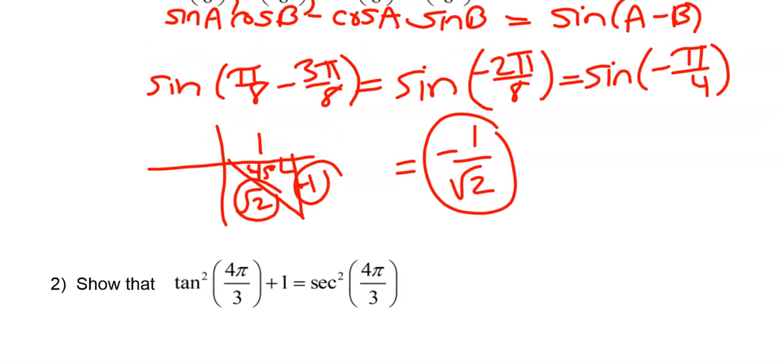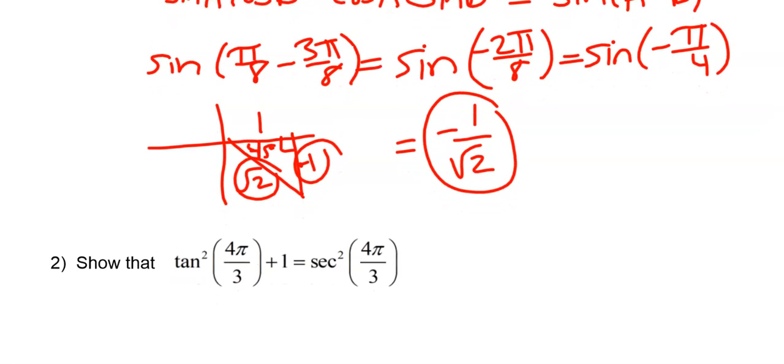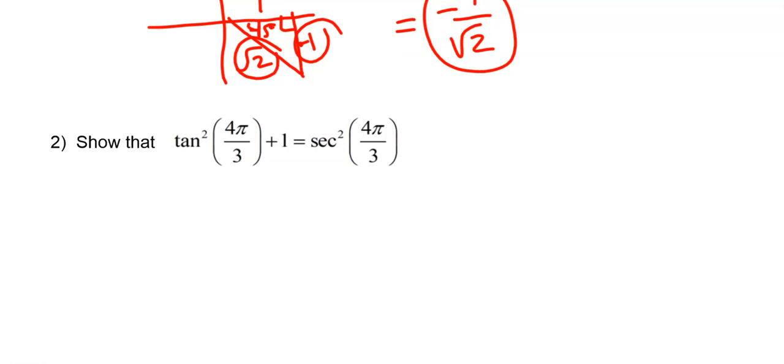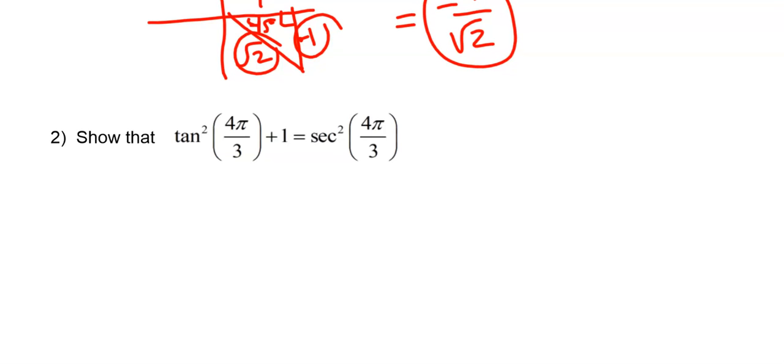Okay, second problem. Show that tangent squared of 4 pi over 3 plus 1 equals secant squared of 4 pi over 3. Okay, well, I do know something about 4 pi over 3. That's a special angle.